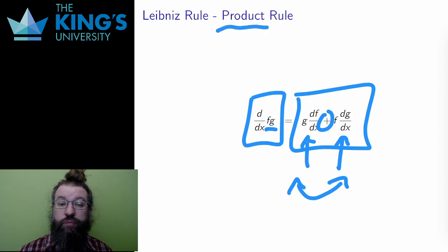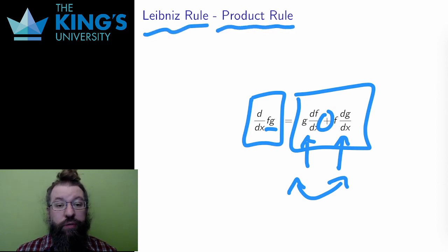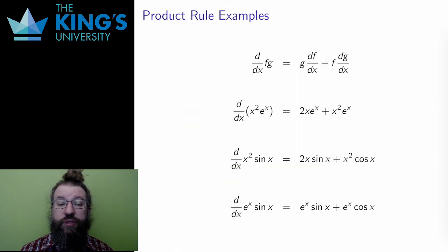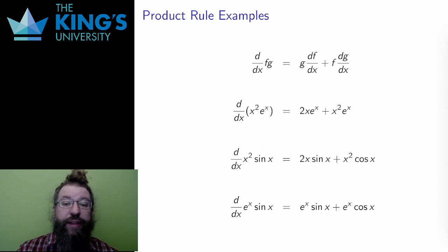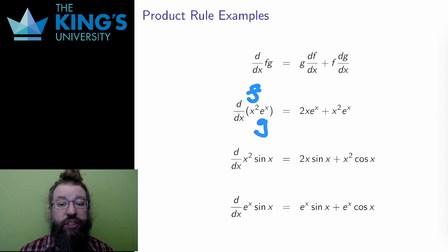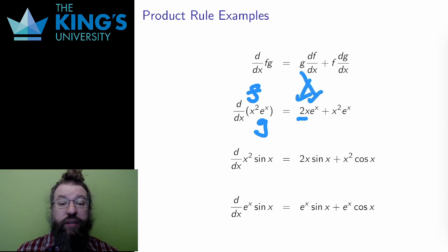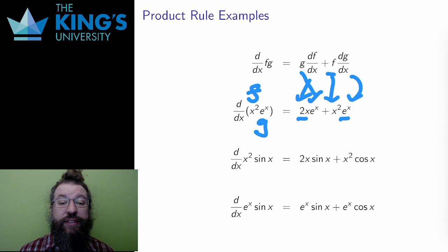This is called the product rule, also called the Leibniz rule, named after Gottfried Leibniz, one of the 17th century mathematicians who worked on the early versions of calculus. Let me do some examples. I suggest, particularly when you are first learning these rules, that you carefully label the pieces. In the first example, I label x squared as f and e to the x as g. The first term is the derivative of x squared, which is 2x by the power rule, times g, which is e to the x. The second term is f, which is x squared, multiplied by the derivative of g, which is e to the x, since e to the x is the unique function which doesn't change under differentiation.